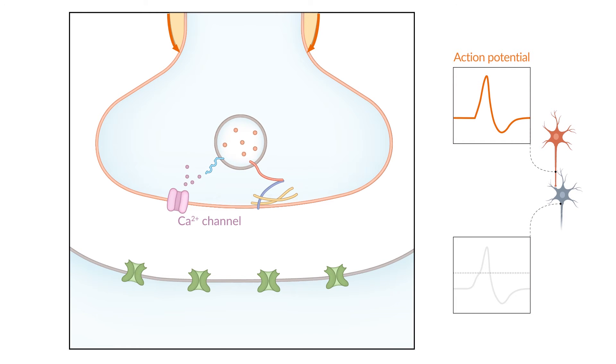This intracellular calcium mediates the fusion of the vesicle with the presynaptic membrane. Calcium binds to synaptotagmin, which is a protein in the synaptic vesicle membrane and acts as a calcium sensor. When calcium binds to synaptotagmin, SNARE proteins located on both vesicles and the presynaptic membrane interact with one another. This results in fusion of the vesicle and presynaptic membranes and the release of neurotransmitters.